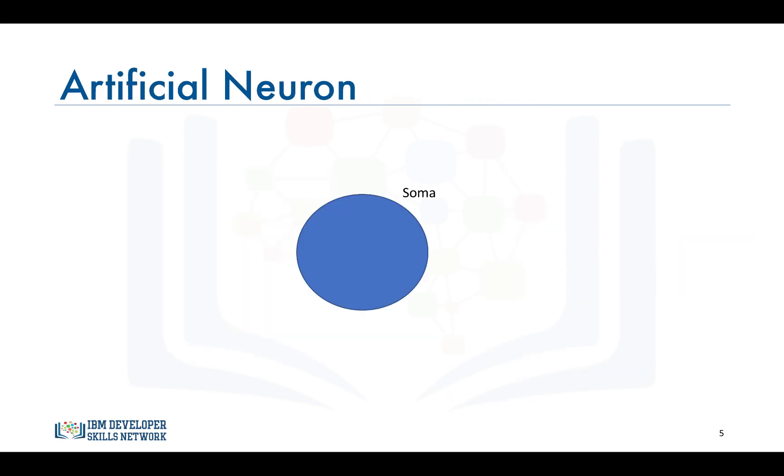An artificial neuron behaves in the same way as a biological neuron. So it consists of a soma, dendrites, and an axon to pass on the output of this neuron to other neurons. The end of the axon can branch off to connect to many other neurons. But for simplicity, we are just showing one branch here.